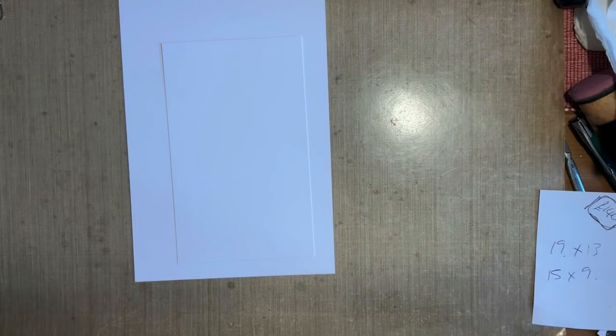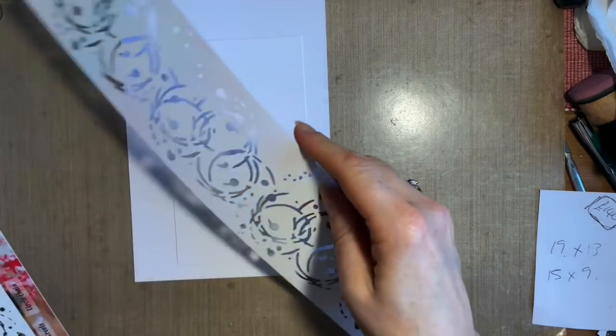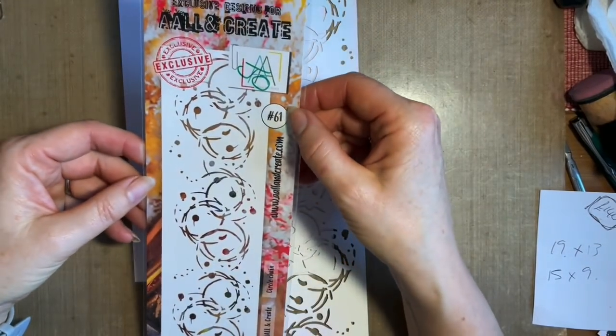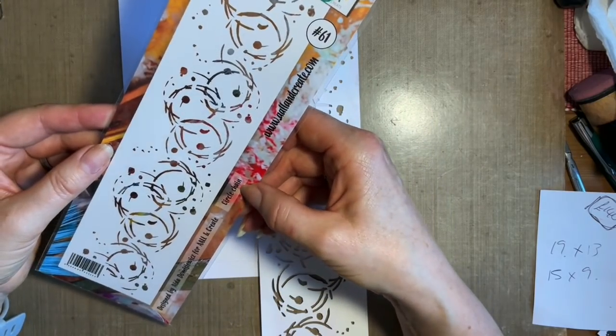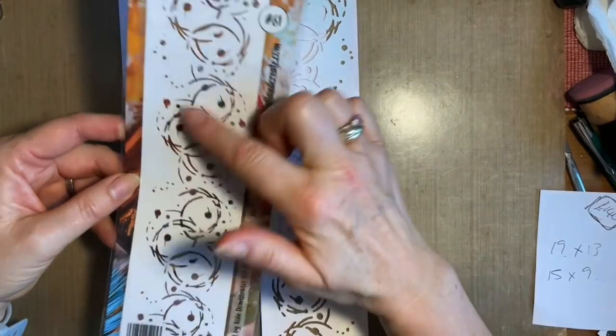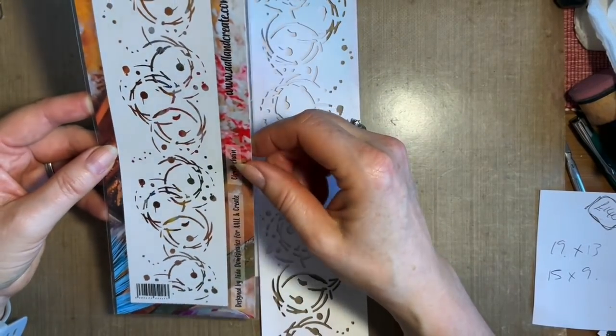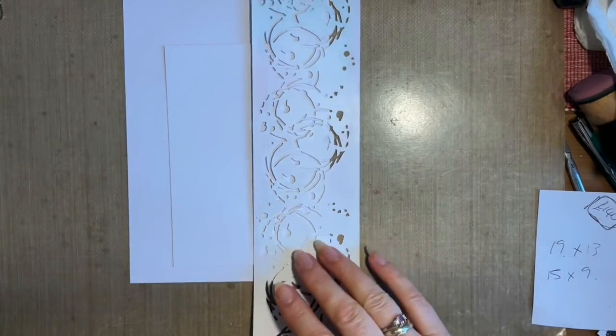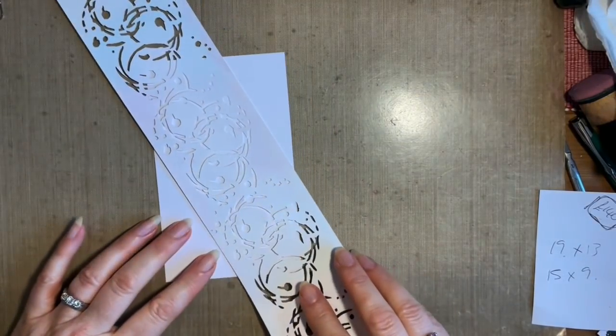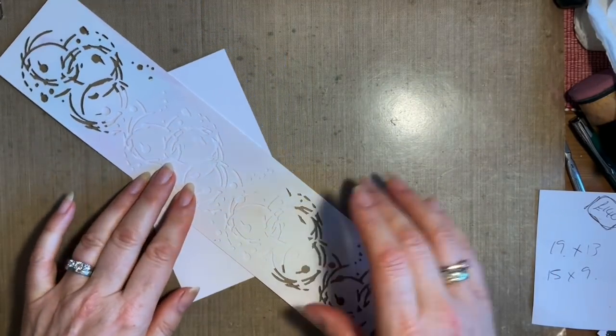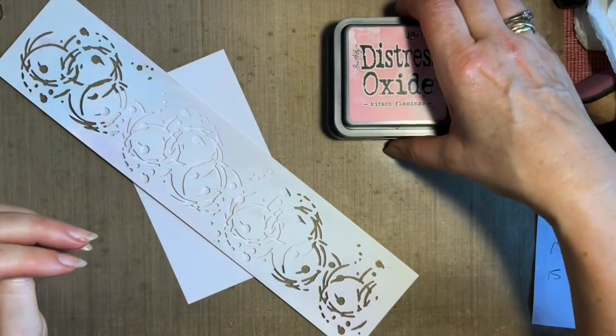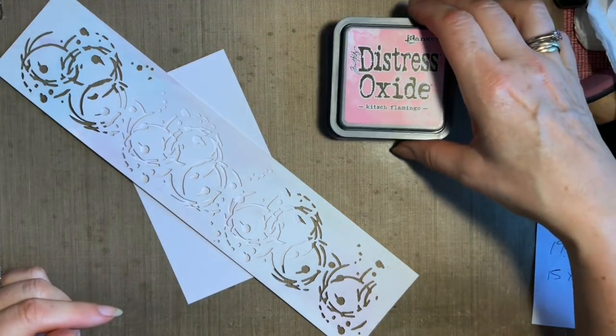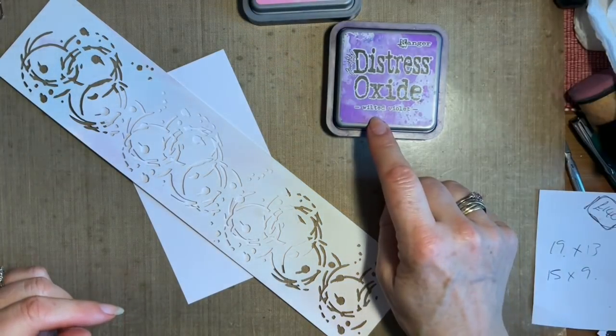And what we're going to do is the background first. And I'm going to use this stencil. It's quite one of the earliest stencils and it's number 61 and it's called circle chain. I have a thing about circles and splodges. So this is perfect for me. I'm going to place it across diagonally. Now, my two colours, I'm using oxide just because they're on my desk. You could use distress inks, whatever you've got. And I'm going for this Kitsch Flamingo. Love this colour and wilted violet.